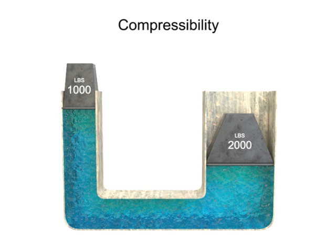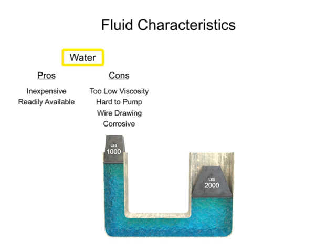Years ago, water was used as the first hydraulic fluid because there was no other liquid available in such large quantities at such a low cost. There are some major drawbacks to using water as a working fluid. Due to its low viscosity, it is difficult to pump.